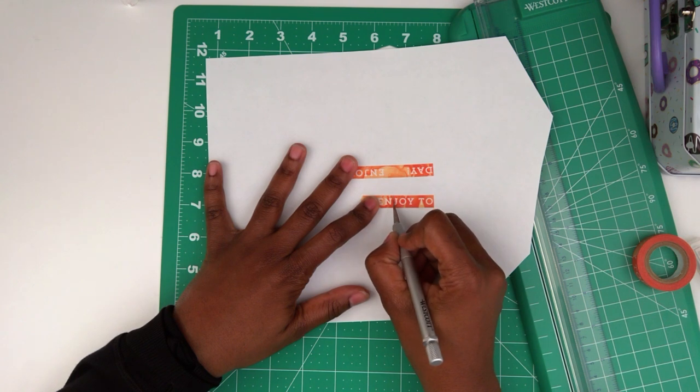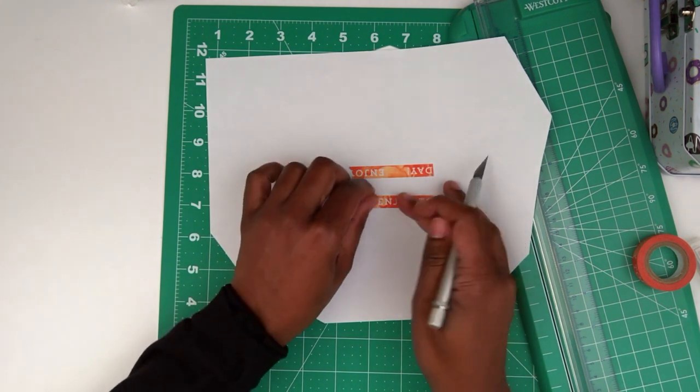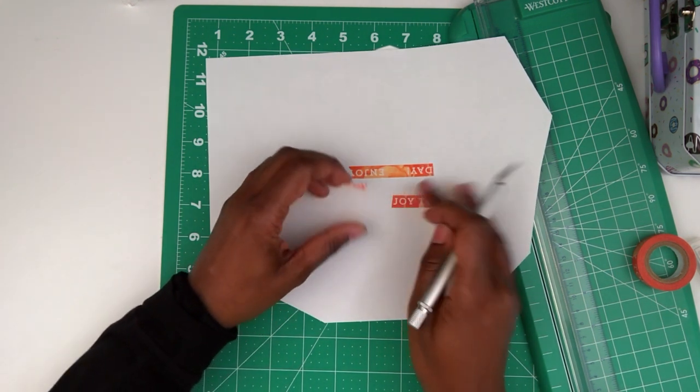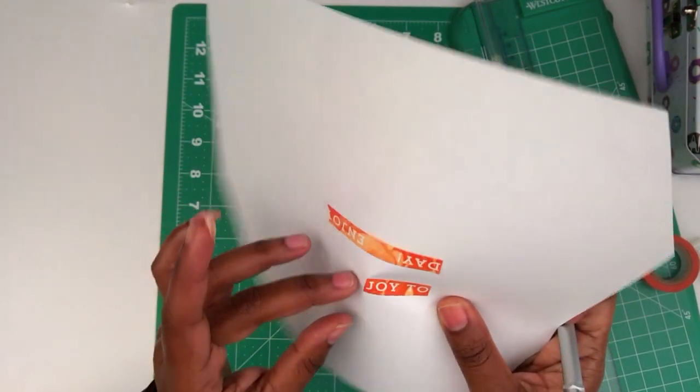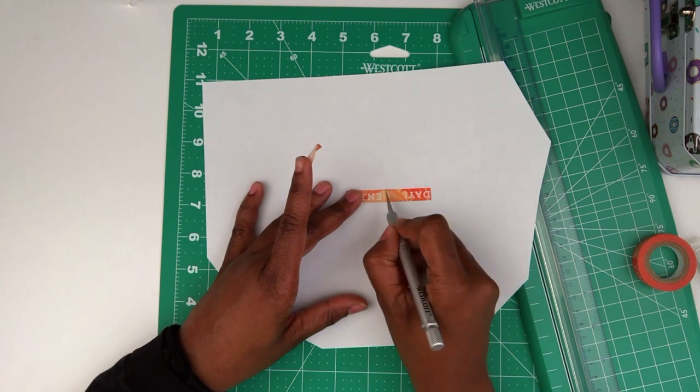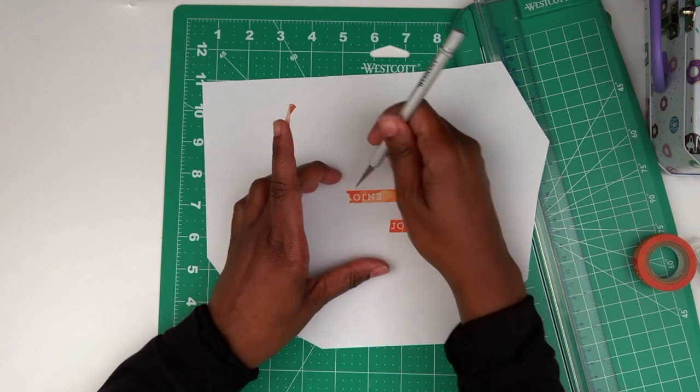So, let's see. Let's cut through here. Once again, I didn't need a lot of pressure. And it cut through there nicely. Actually, I put a little bit too much pressure because that one cut through the paper.